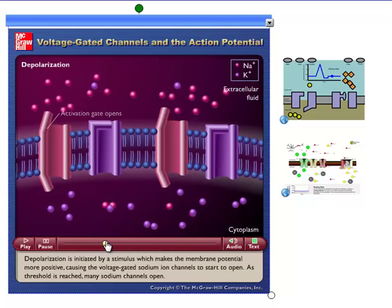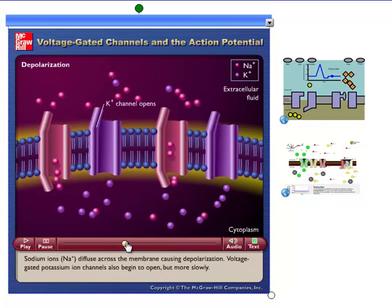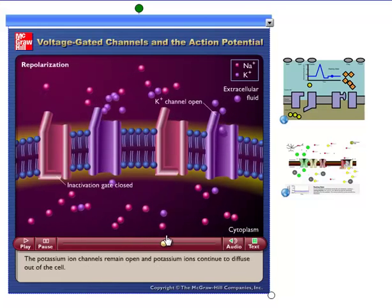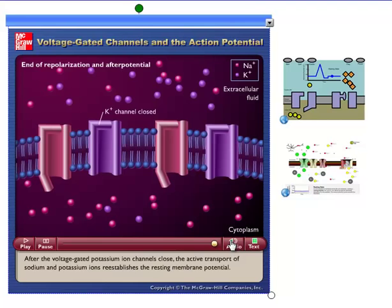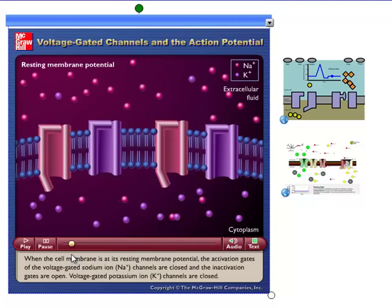So you can see here, sodium ions are rushing in, and then potassium ions are rushing out. And this is diffusion moving down a concentration gradient, and these channels can open and close.